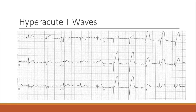Hyperacute T waves are one of the earliest changes you will see after an infarct. As people are getting to the ER faster, you are more likely to see this in the pre-hospital setting. They start having chest pain, they've only had it for 15 minutes, they call 911, you get there — they haven't had time to produce ST elevation yet. The first change you'll see with coronary artery occlusion is actually what will eventually be the reciprocal change. For an anterior infarct, the very first thing that happens is inferior depression, then these big hyperacute T waves, which will eventually evolve into obvious-looking ST elevation.